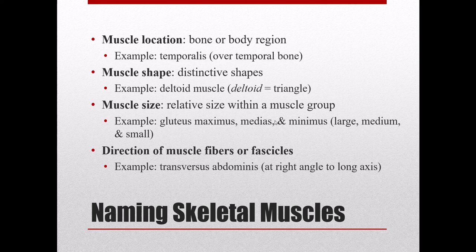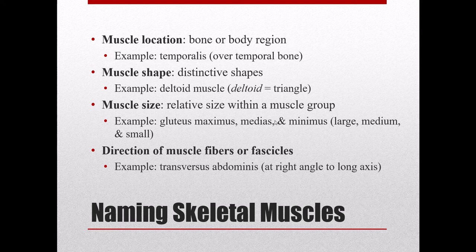One helpful thing about studying the muscular system is that the way we name skeletal muscles tells us a whole lot about them. We can look at a muscle's name and find out its location — what bone or body region it's in. For instance, the temporalis muscle is over the temporal bone. We can also look at the shape: deltoid means delta, meaning triangle, so the deltoid is a somewhat triangular-shaped muscle. We can look at relative size within a group — the gluteus muscles come in different sizes.